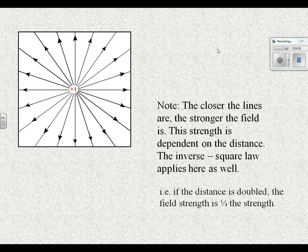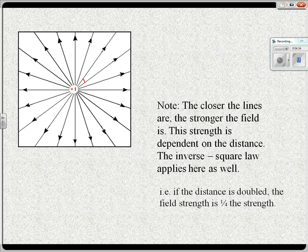Note that the closer the lines are together, the stronger the field is. I've talked about this a few times. Strong here. Weaker there. And this is dependent upon the distance. The inverse square applies here as well. In other words, if the distance is double, the field strength is quarter. That is true for things like charge. That is true for things like light intensity. If you're twice as far away from a bright light bulb, it's a quarter of the lightness.